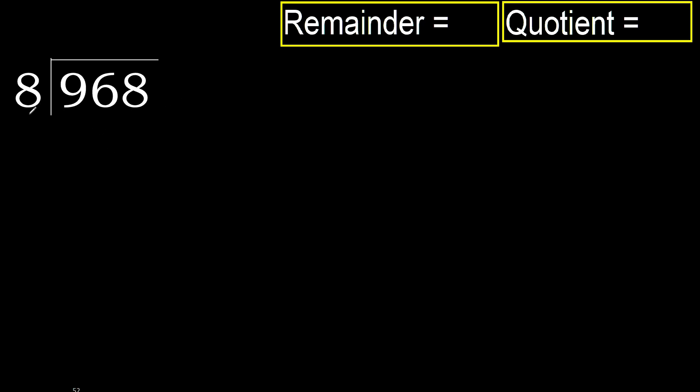968 divided by 8. 9 is not less, therefore work with 9. 8 multiplied by which number is nearest to 9 but not greater?